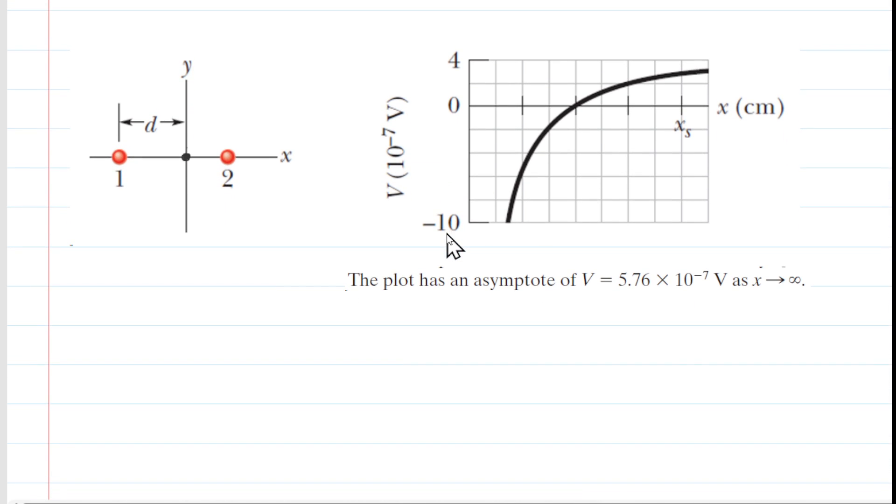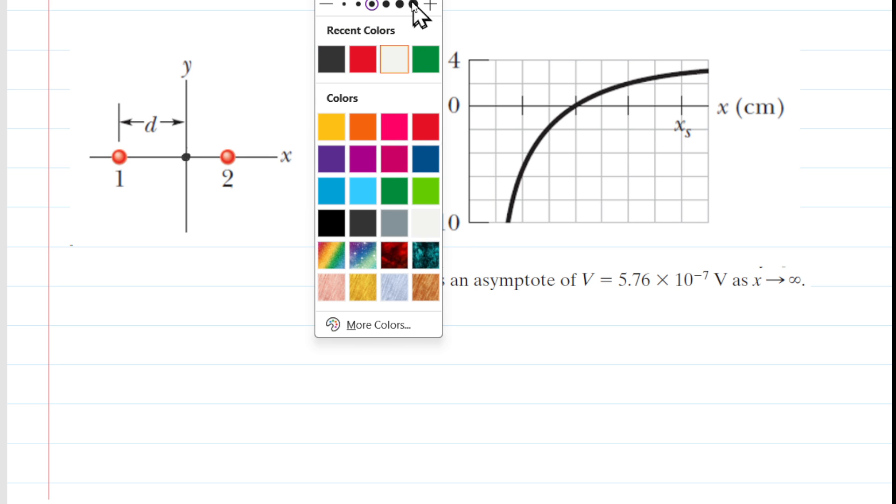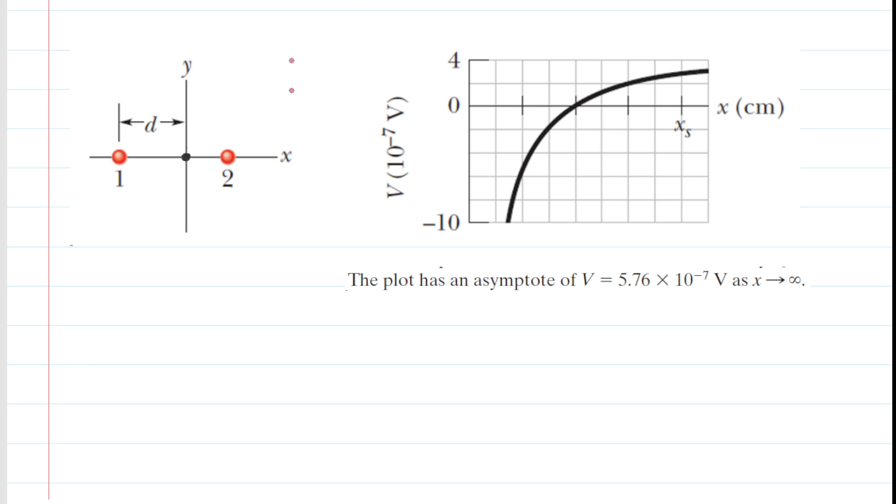So to understand that further, let's take a look at the graphs. We're going to go ahead and just imagine grabbing Q2 and just sliding it to the right. We're going to grab it, move it to the right along the x-axis and do it so much so that it basically is infinitely far away.